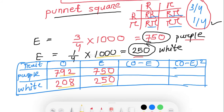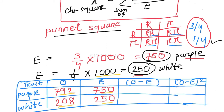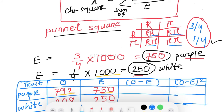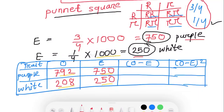We are calculating whether the observed value is similar to or significantly different from the expected value using the chi-square test. The formula is Σ (O − E)² / E. For purple flowers: 792 − 750 = 42. For white flowers: 208 − 250 = −42. Squaring both gives 1,764 for each.